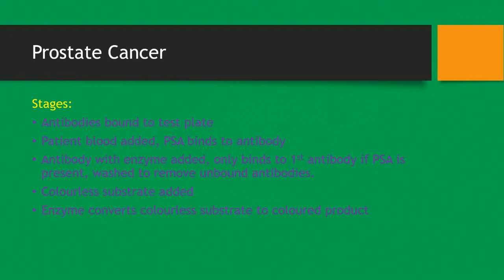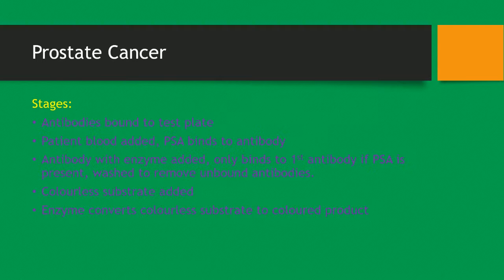Let's go through the ELISA test steps. Antibodies are bound to a test plate. Then the patient's blood is added, and if PSA antigen is present it will bind to the antibody on the test plate. Then a second antibody with an enzyme attached is added — this is different from the patient's blood step. This enzyme-linked antibody will only bind to the first antibody if PSA is present. Once binding has occurred, you wash the test plate to remove unbound antibodies, leaving only the antibodies that have PSA bound to them along with the attached enzyme.